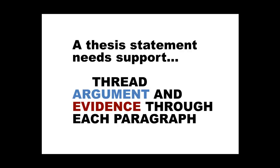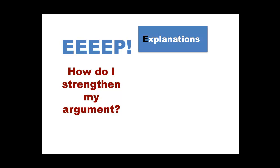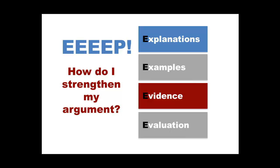To argue your case, you should thread argument and evidence throughout your essay in order to support your thesis statement. Each of your paragraphs should address one main point, and it should be clear how that point relates to your main argument. Use this model as a guide: you can include explanations, examples, evidence, and evaluation in any combination or order to support the points you are making. Make sure your sources are credible, reliable, and academic — if you do not use a variety of appropriate sources, your argument will be weakened.